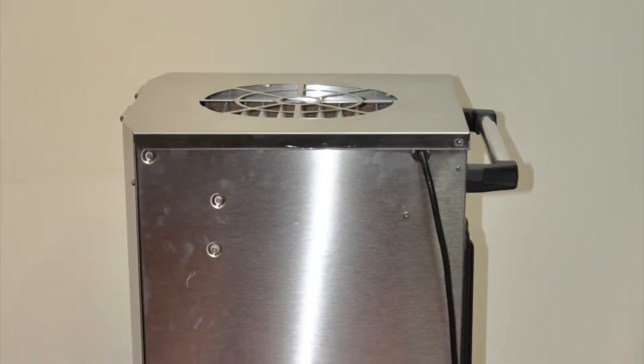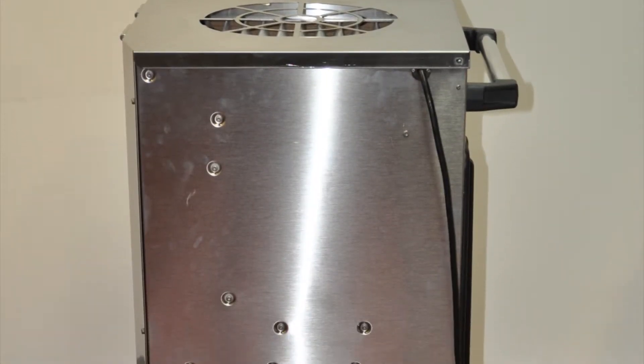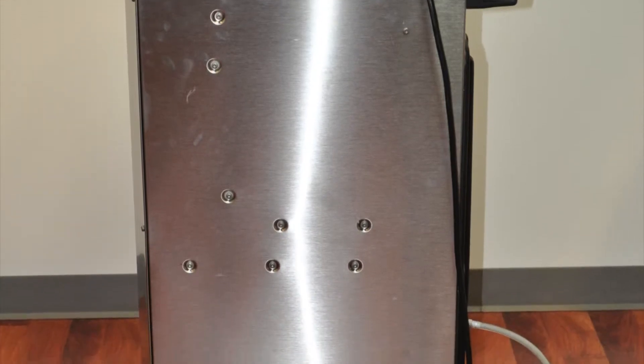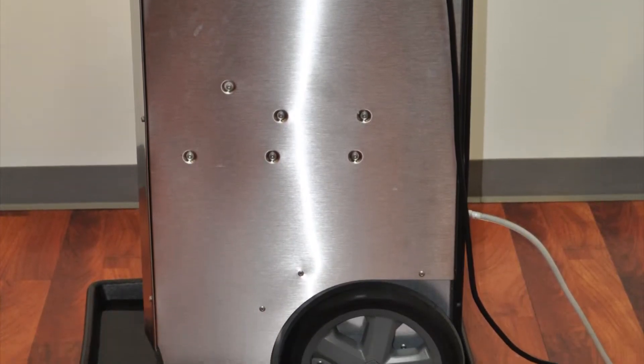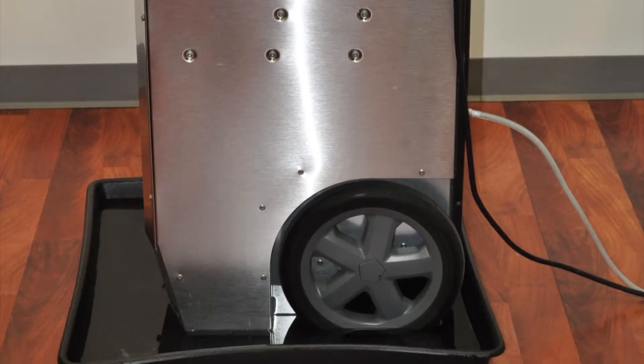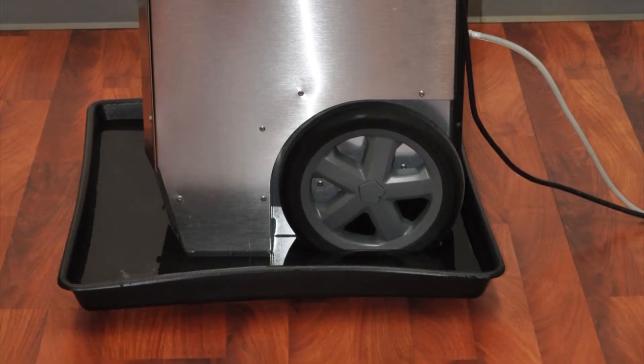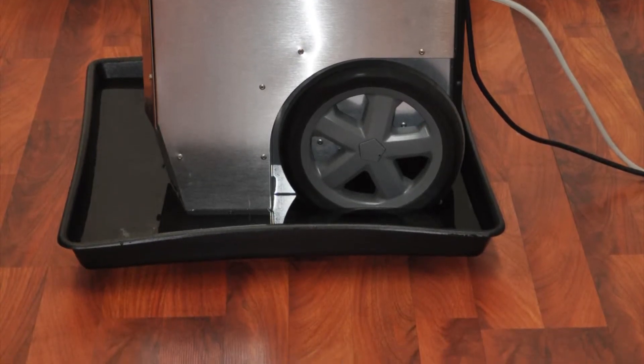When it comes to refrigerant dehumidifiers, there are essentially three types: those which have leaked, those which will leak, and those which are inner protected which will keep water from reaching floor coverings.